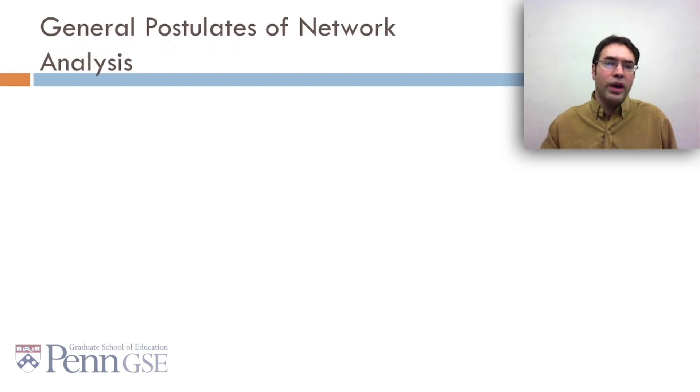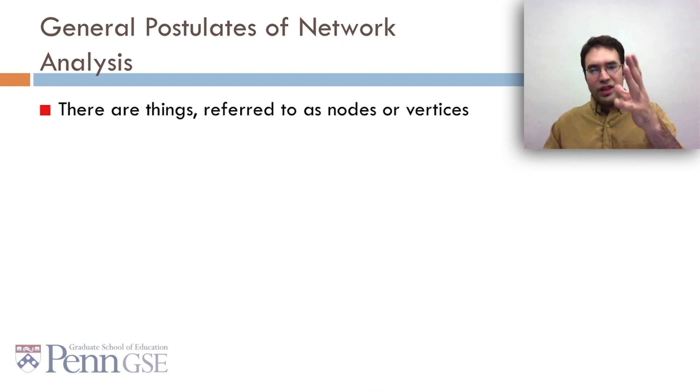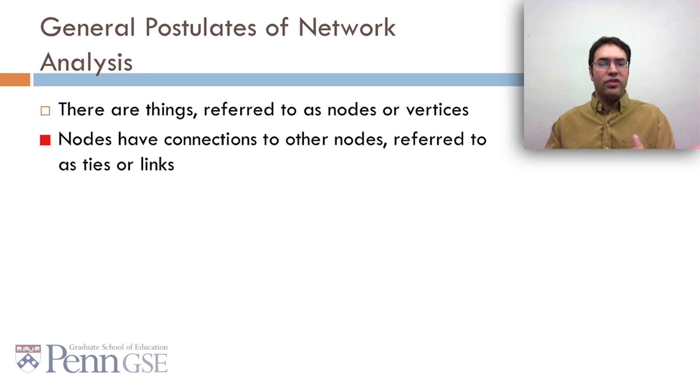Regardless of what your domain is, there are a few general postulates of network analysis. There are these things, which are referred to as nodes or vertices. And these nodes have connections to other nodes. And these connections can be referred to as ties or links. So, for example, we've got people. Those would be the nodes. And we have email conversations. That would be the links.